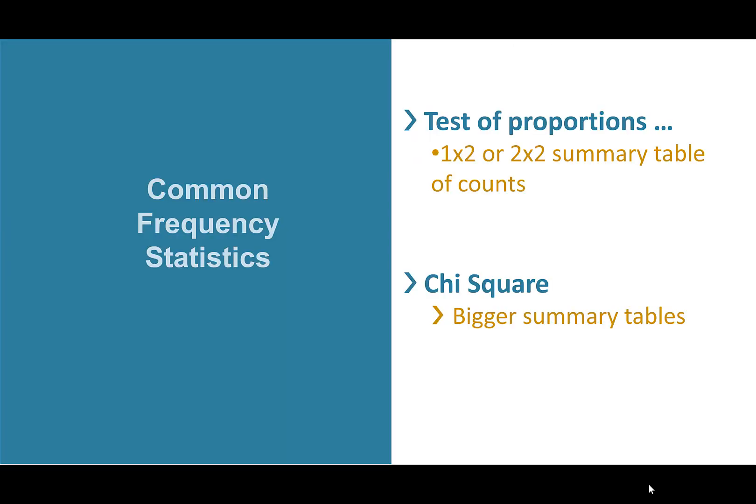You've now seen how to use chi-square, interpret its results, and handle issues like expected cell counts less than 5. In summary for both parts of these videos: the distinguishing factor between a test of proportions and a chi-square test is the size of the summary table. If it's a 1 by 2 or 2 by 2 table, use the test of proportions. If it's bigger, use a chi-square test.